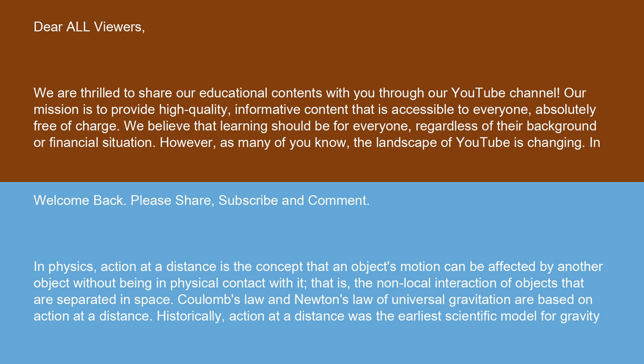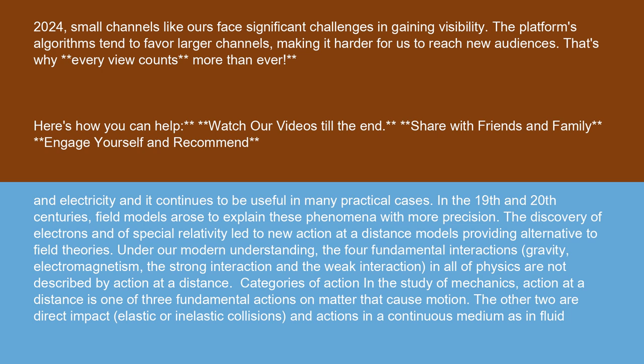Coulomb's law and Newton's law of universal gravitation are based on action at a distance. Historically, action at a distance was the earliest scientific model for gravity in electricity, and it continues to be useful in many practical cases. In the 19th and 20th centuries, field models arose to explain these phenomena with more precision. The discovery of electrons and special relativity led to new action at a distance models providing alternatives to field theories.